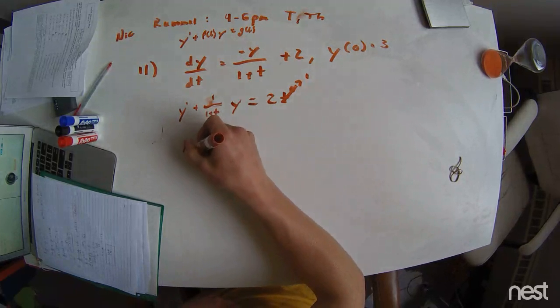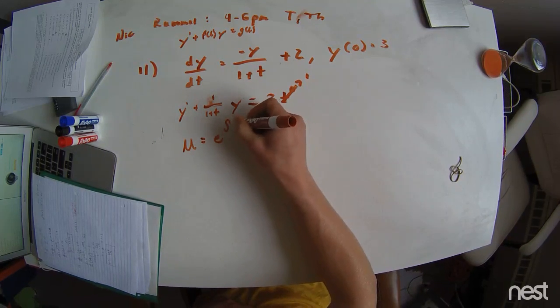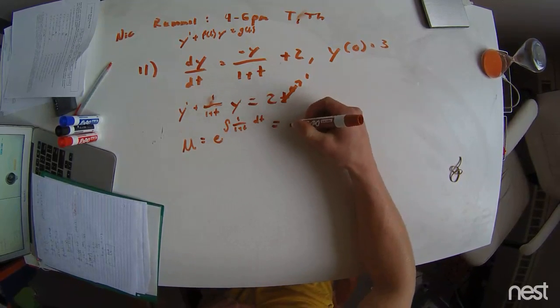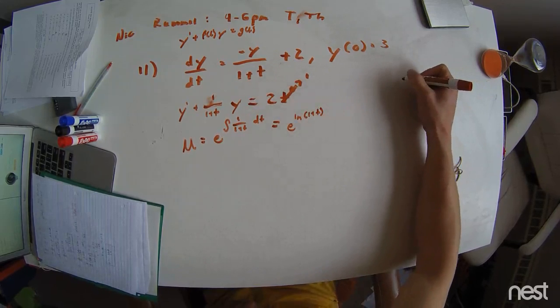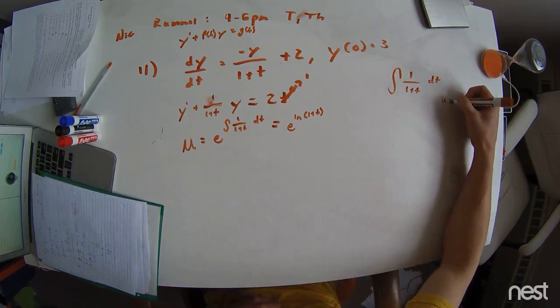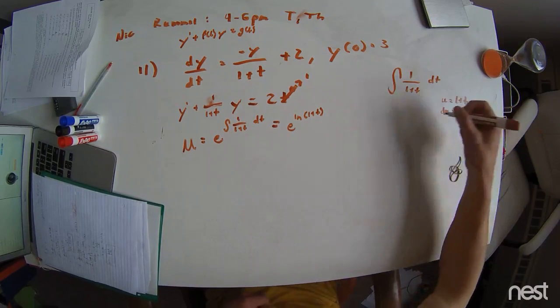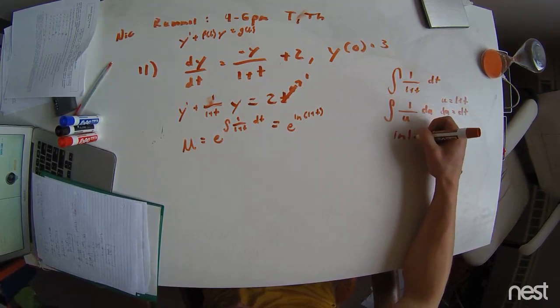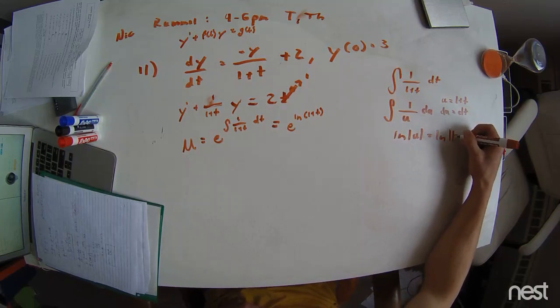So the very first step is we're going to find the mu. And mu is always going to equal e to the integral times our f of t, which in this case is 1 over 1 plus t dt, which then equals e to the ln of 1 plus t. If you want to see that integral, it's over here. The integral of 1 over 1 plus t dt. We make u equal to 1 plus t, which means our du equals just dt. Simple u substitution. We get 1 over u du, which equals the ln of the absolute value of u, which equals the ln of the absolute value of 1 plus t.